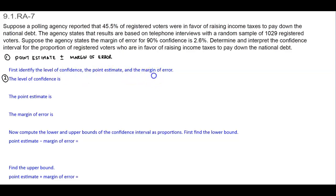The level of confidence is 90%. The point estimate is the reported 45.5% of registered voters who were in favor, so that represents the point estimate. And the margin of error is 2.6%, so that represents 2.6%.